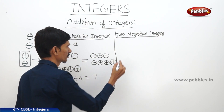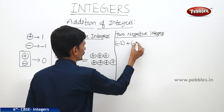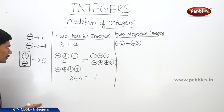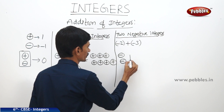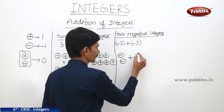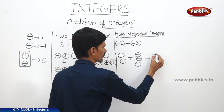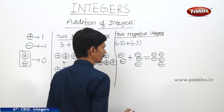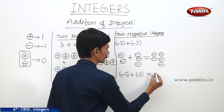When we add two negative integers, for example minus 2 plus minus 3, we represent them using minus signs. Minus 2 means two minus signs, and minus 3 means three minus signs. Counting all of them: 1, 2, 3, 4, 5. So we get five negative signs.